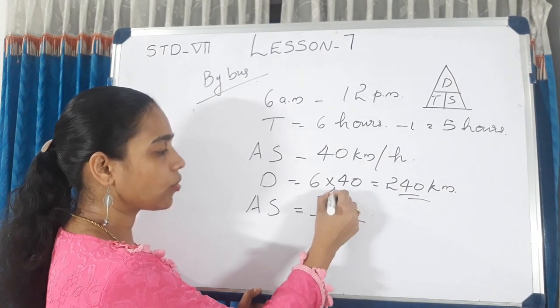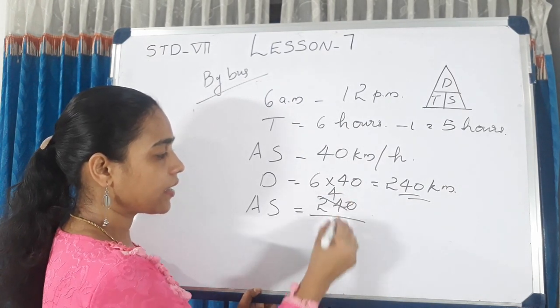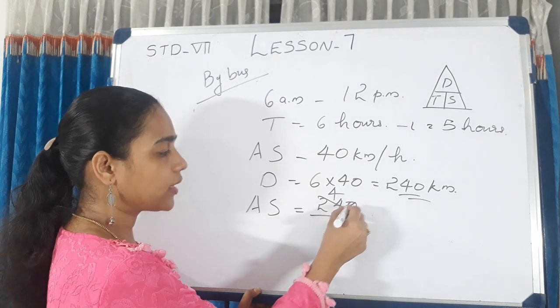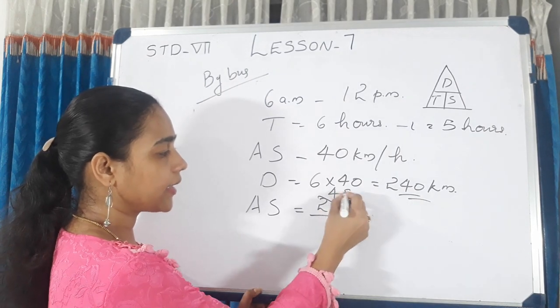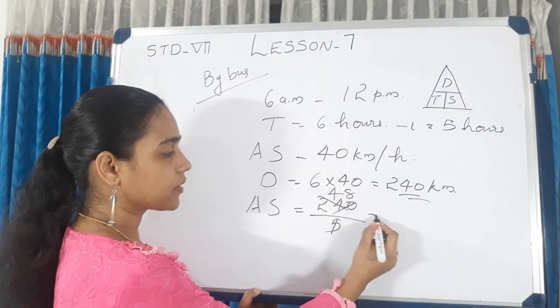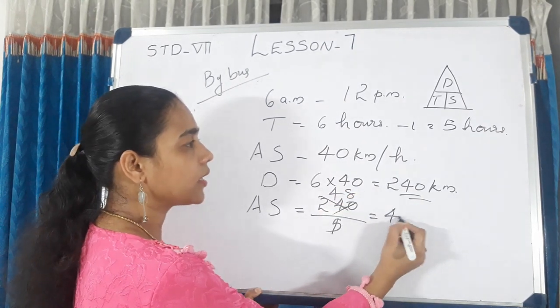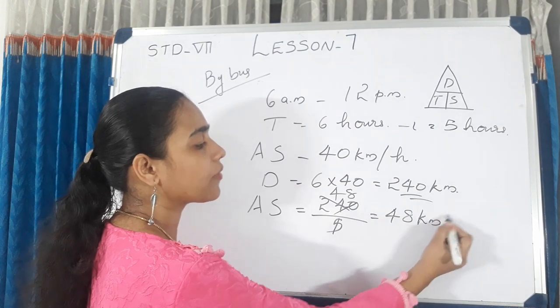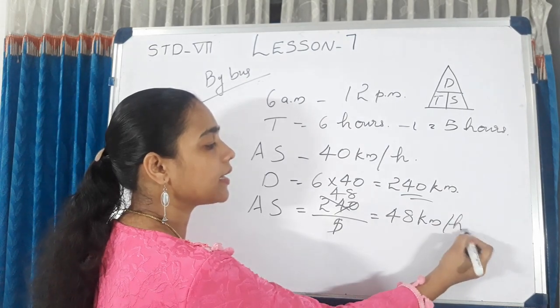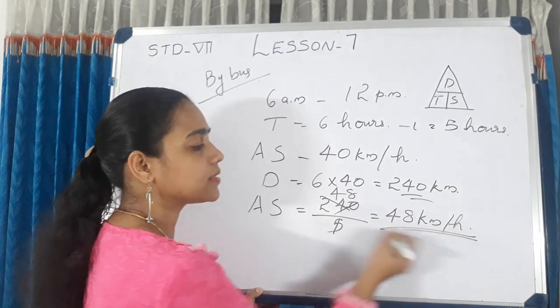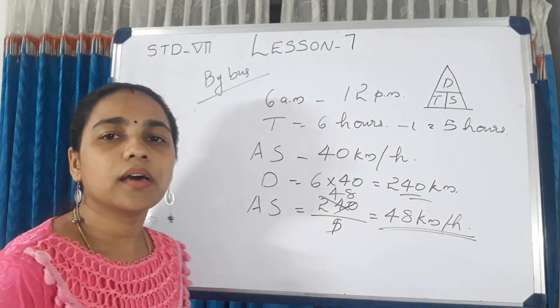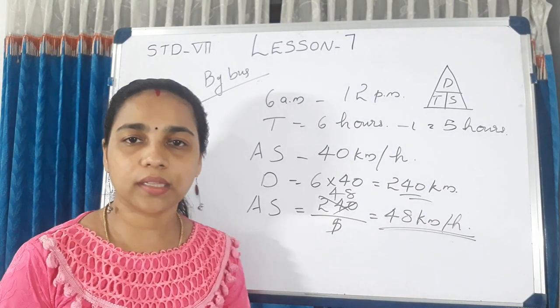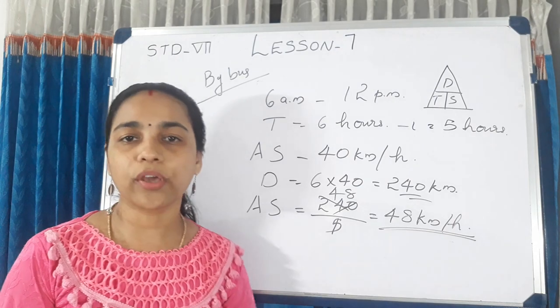240 divided by 5 = 48 km per hour. The speed needs to be increased to 48 km per hour.